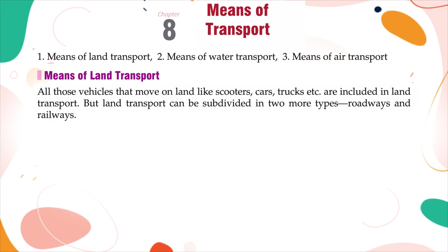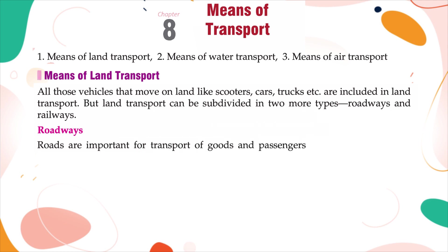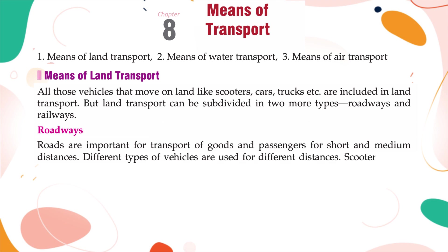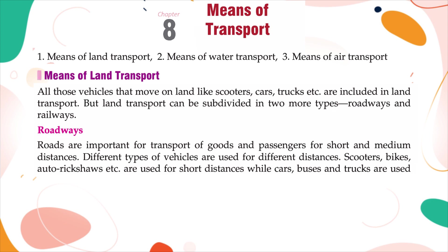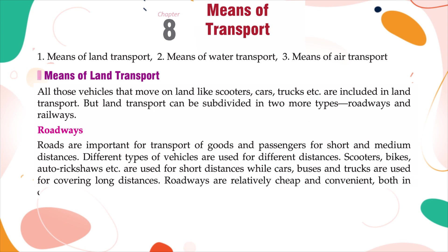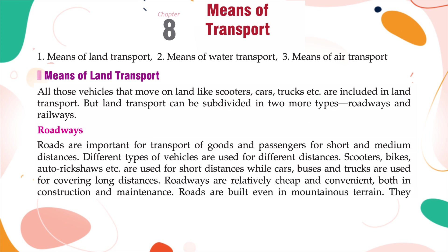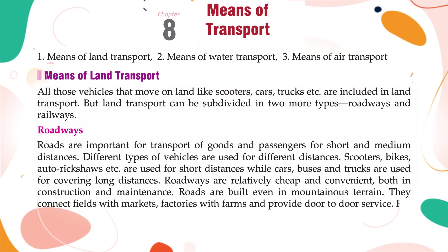Roadways: Roads are important for transport of goods and passengers for short and medium distances. Different types of vehicles are used for different distances. Scooters, bikes, auto rickshaws, etc. are used for short distances, while cars, buses, and trucks are used for covering long distances. Roadways are relatively cheap and convenient, both in construction and maintenance. Roads are built even in mountainous terrain. They connect fields with markets, factories with farms, and provide door-to-door service.